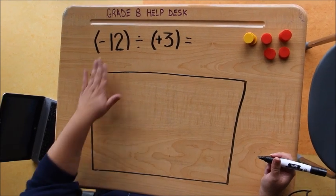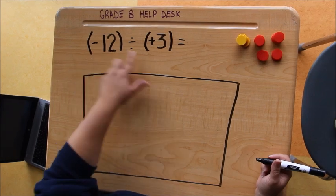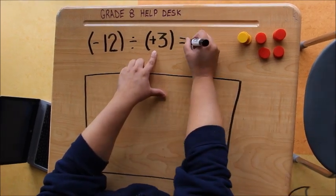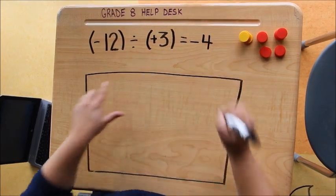So we're going to start by looking at the numbers. We have negative 12 divided by positive 3. And we know that when the signs are different, our quotient will be negative. And we know that 12 divided by 3 is 4.